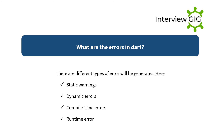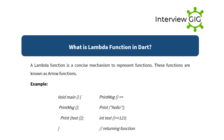What are the errors in Dart? Different types of errors in Dart include: static warnings, dynamic errors, compile-time errors, and runtime errors. What is a lambda function in Dart? A lambda function is a concise mechanism to represent functions. These functions are also known as arrow functions.